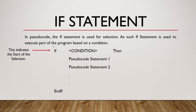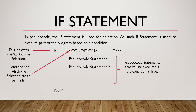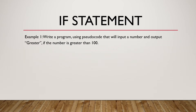The 'if' over here indicates the start of the selection. It is followed by a condition — the condition for which the selection has to be made. After the condition, we have the pseudocode statement that will be executed if the condition is true. And lastly, we have the 'end if', which indicates the end of the selection. So let us look at an example of making use of the if statement.